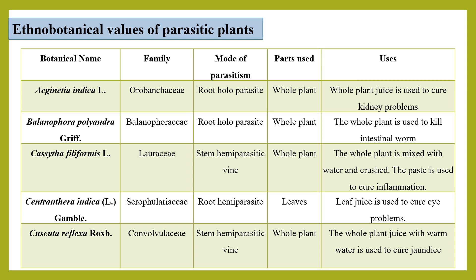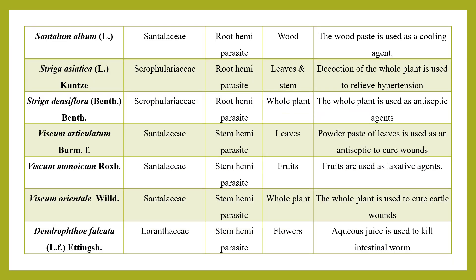Cuscuta reflexa — the whole plant juice with warm water is used to cure jaundice. Santalum album — the wood paste is used as a cooling agent. Striga asiatica — decoction of the whole plant is used to relieve hypertension.